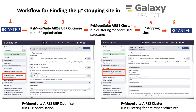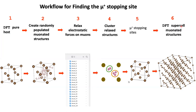That was what you have to do if you run your method using the command line tools. If the method is run in Galaxy, the steps of creating and relaxing the random structures are condensed in one Galaxy tool called PyMuonSuite UEP Optimize. Then we run another tool for doing the clustering in step four, and we do the density functional theory simulations with CASTEP outside of Galaxy. In the next slide I will describe in more detail each step in the workflow, and then I will run this workflow in Galaxy.